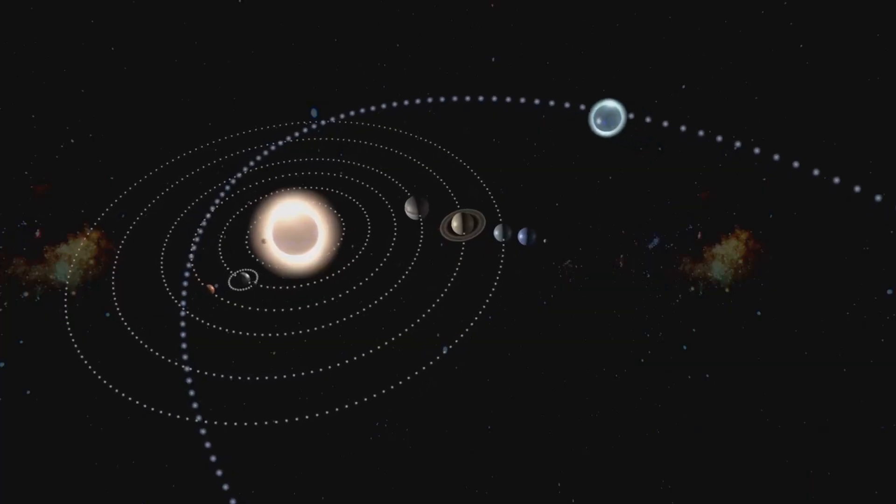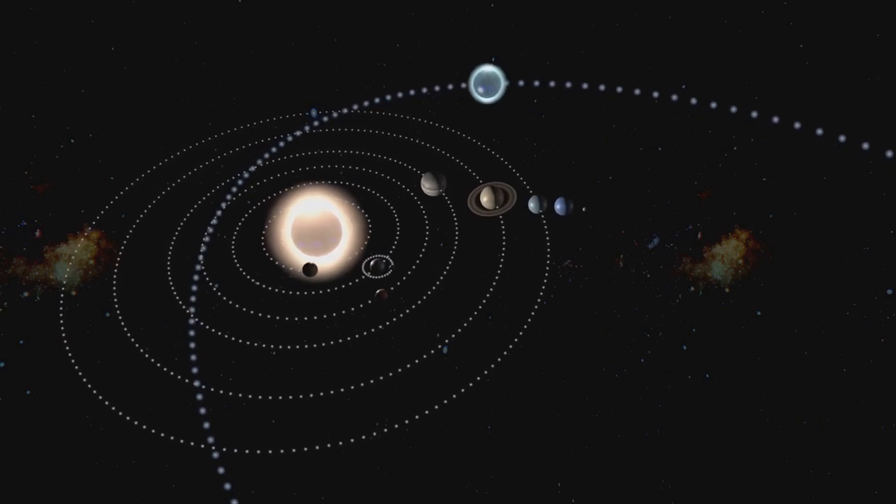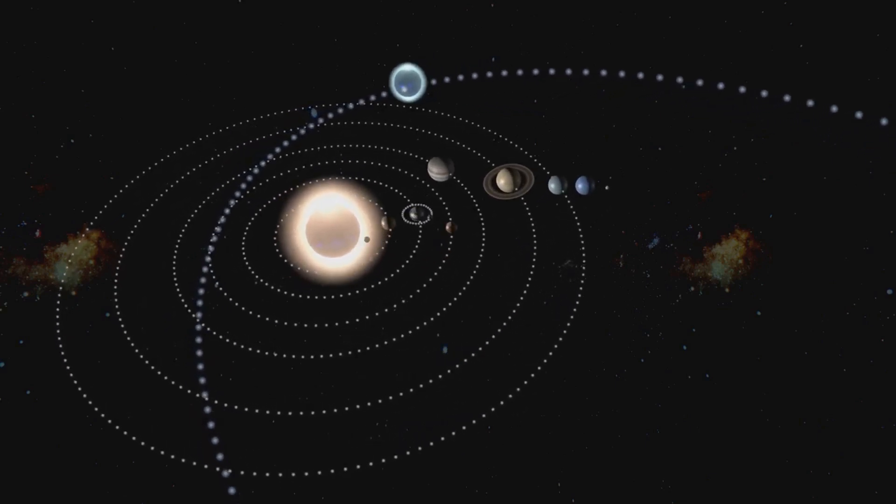This is called the wobble method, or radial velocity method. Together, these techniques have vastly expanded our knowledge of the universe, revealing a multitude of hidden worlds.